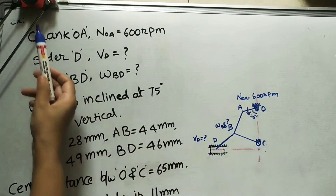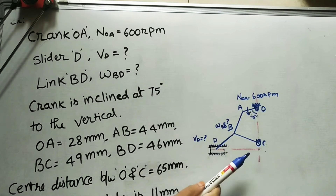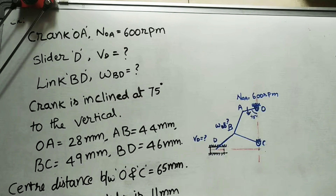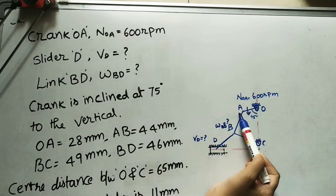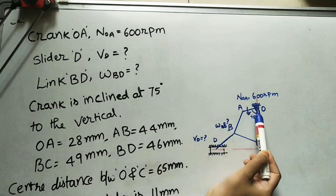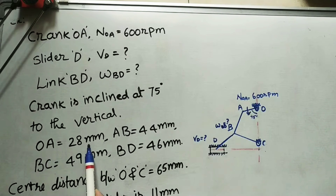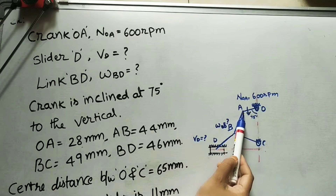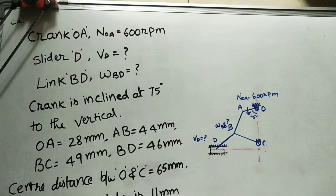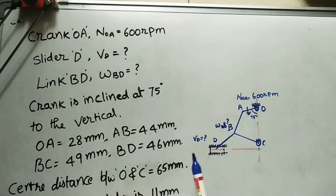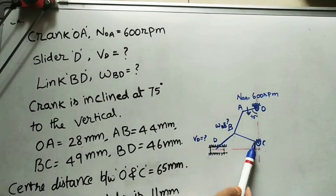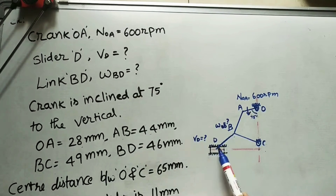I did this diagram by using the drafter. Always use a drafter for constructing velocity diagrams and this type of diagram — you will get the correct values. I first drew a vertical line, marked one point OA, then did a 75-degree line. On this 75-degree line, I marked the OA value. OA is given as 28 mm, meaning 2.8 cm. AB is given as 44 mm or 4.4 cm. BC is given as 4.9 cm.